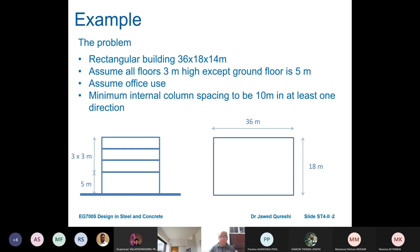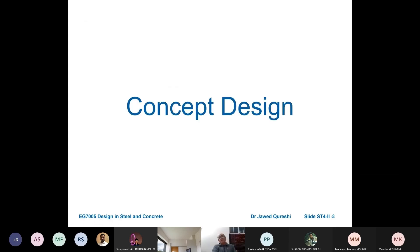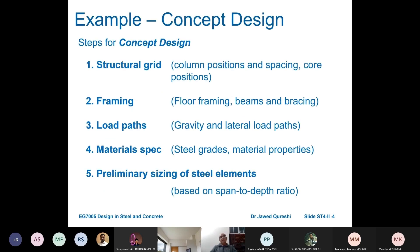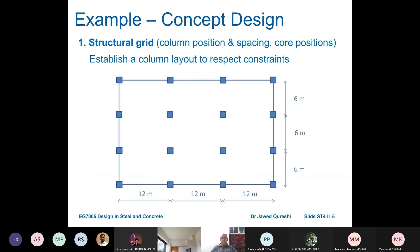In concept design, I will follow these steps: establish a structural grid — meaning column positions and spacing — framing, load paths, material specification, and initial sizing of elements. Because the horizontal dimension is 36m and the vertical is 18m, and the minimum column spacing in at least one direction must be 10 meters, this is the reason we have kept these dimensions as 12 meters, which is more than 10.